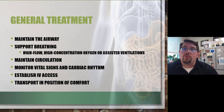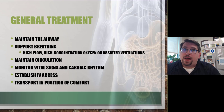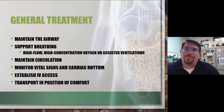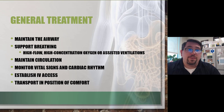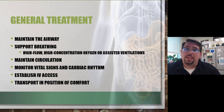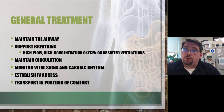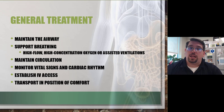Generalized treatment includes maintaining the airway, supporting breathing with high-flow high-concentration oxygen, and assisting with ventilations. Use pulse oximetry to titrate oxygen and prevent hyperoxia in non-hypovolemic patients. Establish a large-bore IV line — if they're bleeding, the best replacement is blood, and you'll need a large enough catheter for that. Reverse hypovolemia with isotonic crystalloid solutions, ensure the catheter can accept blood, and consider hanging blood tubing proactively.